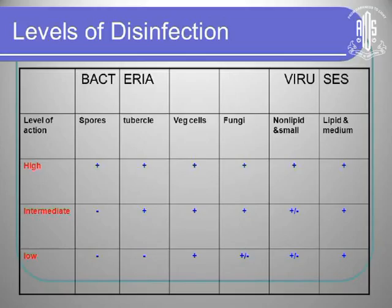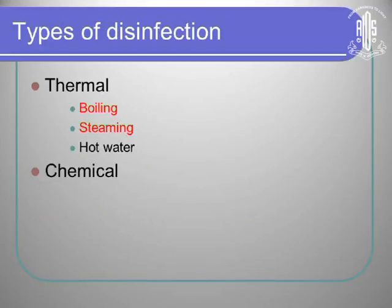The levels of disinfection: high-level disinfection means spores and tubercle bacillus are tackled. The types of disinfection are thermal and chemical. Thermal means boiling, steaming, or hot water.